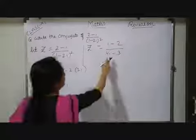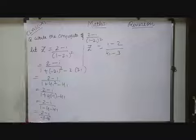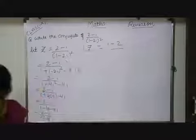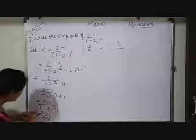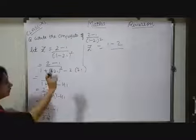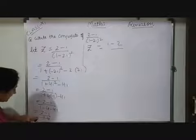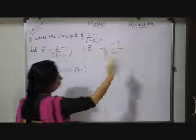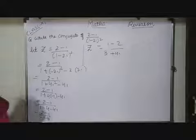Yeah, it will be positive. 3 plus 4i. From a numerator if I have taken minus, so i will be positive, 2 will be negative. Yes. If from here I will take out minus, so 3 will be positive, 4i will also be positive. Sorry, by mistake I wrote it.